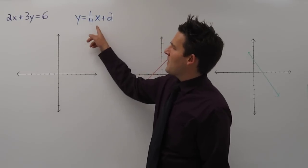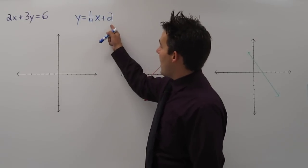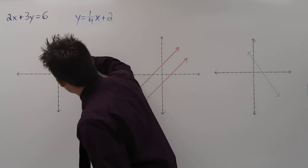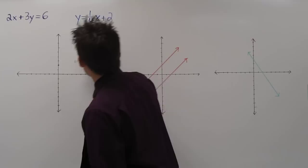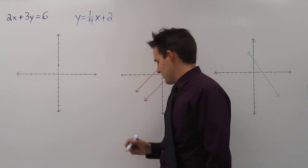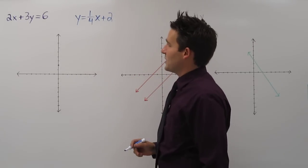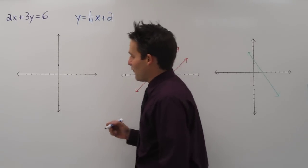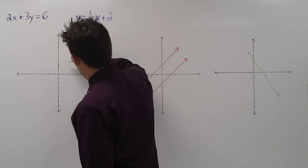So I'm going to start by graphing this blue one. The y-intercept is 2, and the slope is 1 fourth. So that means we go up 1 over 4.